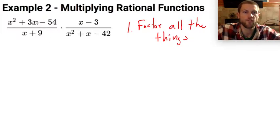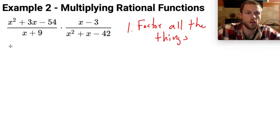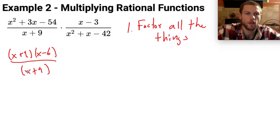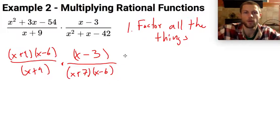And so if I factor my first rational expression here, this is going to be x plus 9 times x minus 6, and that's all over x plus 9. And this is being multiplied by x minus 3 all over x plus 7 and x minus 6. All right, so that's step one. Check.